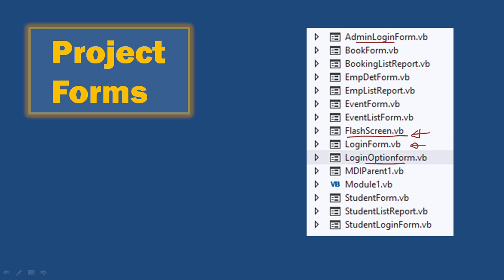There is a login option form to select who has to log in. Then the MDI parent form, which consists of a menu through which you can navigate to the rest of the forms. Then Module 2, which declares global variables, functions, and procedures. Then the student form, student list, student login, and student portal. I will explain these again in the next slide.